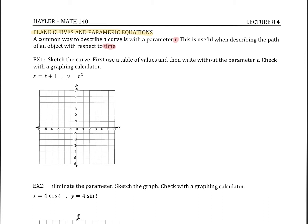Let's take a look at example one: sketch the curve, first using a table of values, and then write the equation without the parameter t. Check with the graphing calculator. One thing to note for lecture 8.4 — for any of the problems that require calculator work, I will be uploading a separate video. If you need help, please send me an email and I'll either make a video or find one on YouTube.